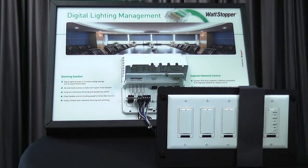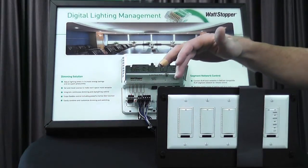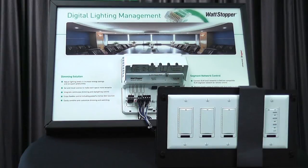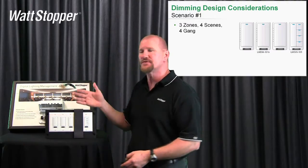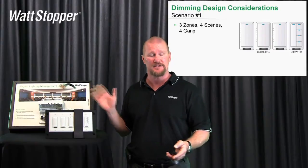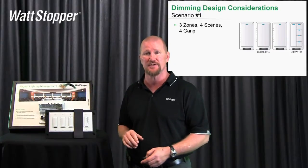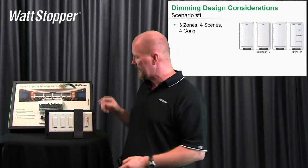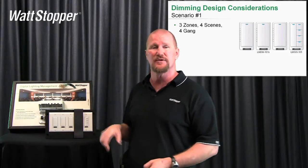We're controlling three zones in four gangs and have four scenes we have access to. This is the traditional route — what I call the old school way. It's the traditional way we used to do it: a dimmer for each load and then a scene switch.